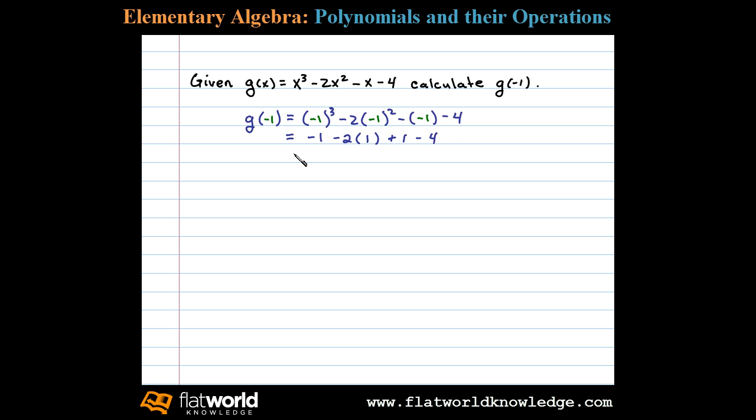Then minus 4. We have here negative 1 minus 2 plus 1 minus 4. Addition and subtraction—we'll work those left to right.